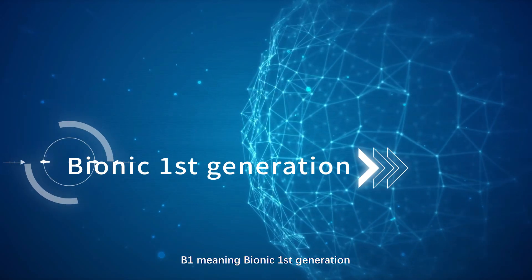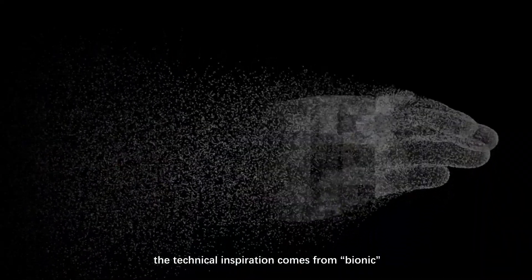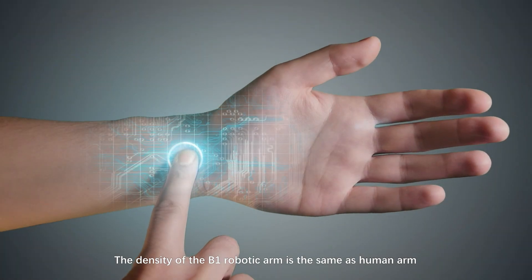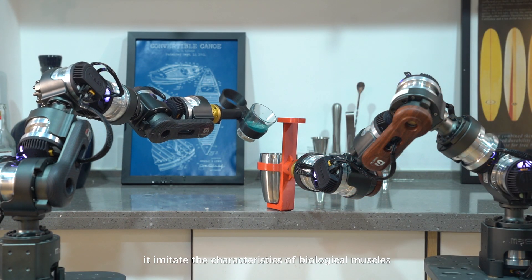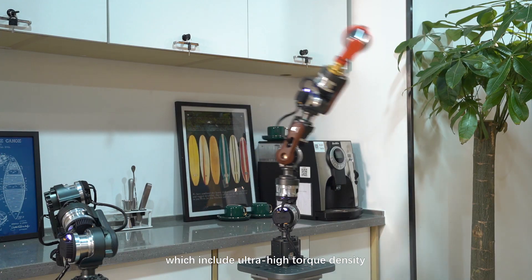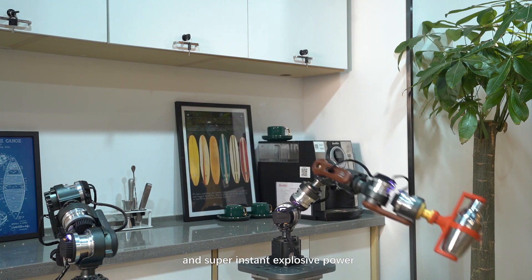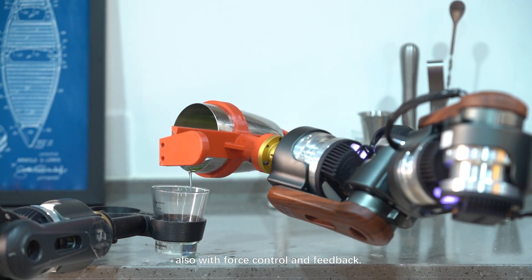B1 meaning Bionic First Generation. The technical inspiration comes from Bionic. The density of the B1 robotic arm is the same as human arm. It imitates the characteristics of biological muscles, which include ultra-high torque density and super-instant explosive power, also with force control and feedback.